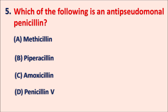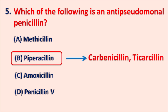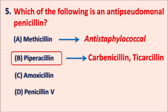The right answer is piperacillin. Piperacillin is an anti-pseudomonal penicillin, and other drugs like carbenicillin and ticarcillin are also anti-pseudomonal penicillins. Similarly, methicillin is one of the drugs used in Staphylococcus aureus infections, so methicillin is an anti-staphylococcal penicillin.